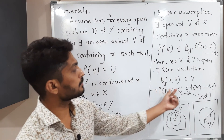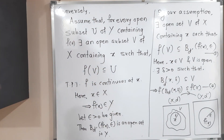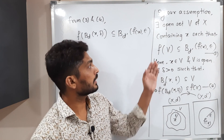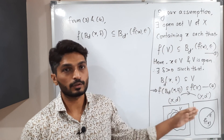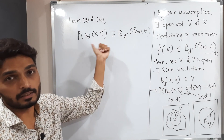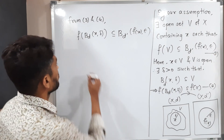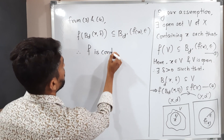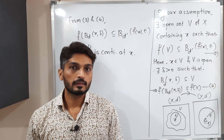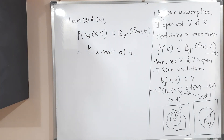Combining statements (3) and (4): since A ⊆ B and B ⊆ C implies A ⊆ C, we get f(B(d, x, delta)) ⊆ B(d', f(x), epsilon). This is exactly the definition of a continuous function. Therefore f is continuous at x. In this way we proved the theorem in both directions, so the proof is complete.